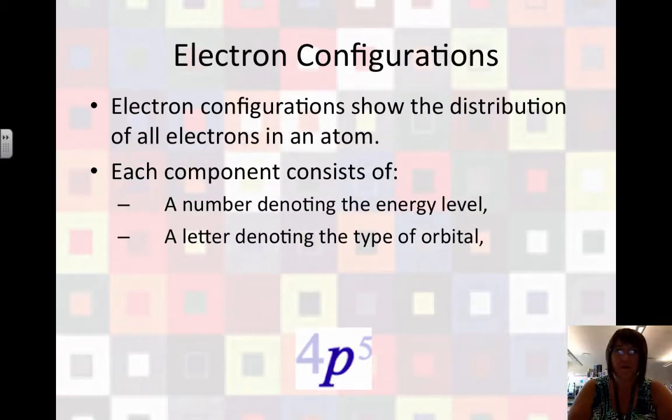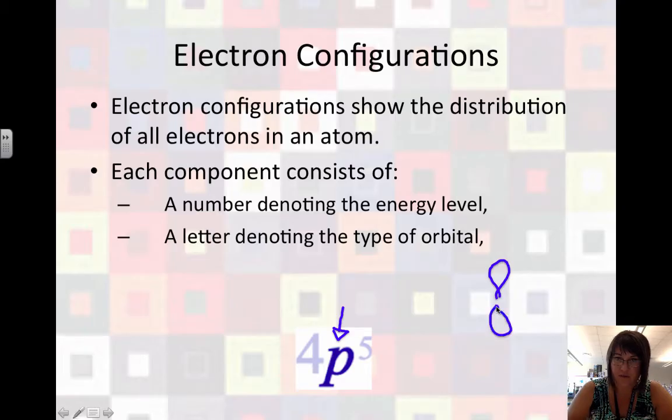And we also have a letter denoting the type of orbital. So in energy level 4, we're focused on the subshell P, which means we have some sort of petal-shaped orbital. Maybe facing up and down, or it could be the side-to-side version, or maybe back and forth.